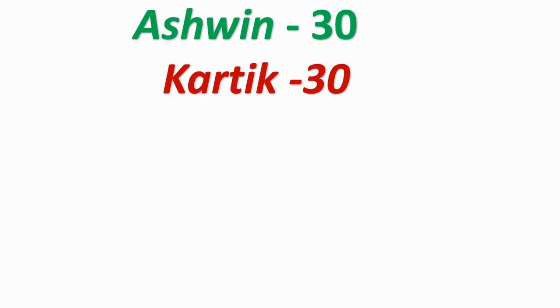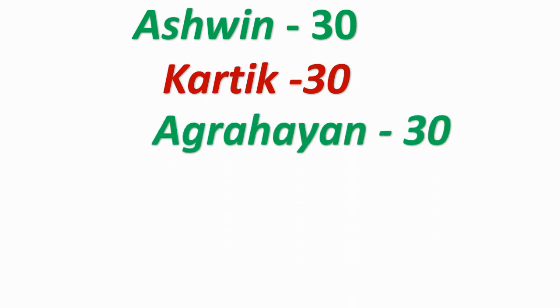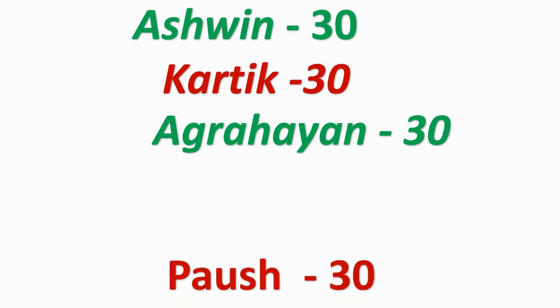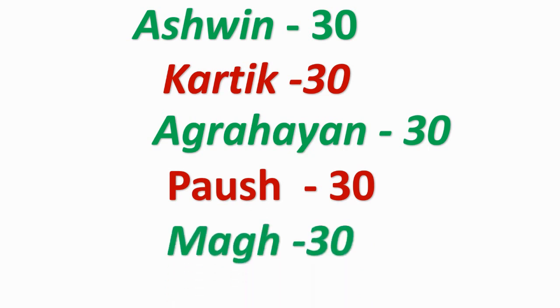7th Ashwin — 30 days. 8th Kartik — 30 days. 9th Agrahan — 30 days. 10th Posh — 30 days. 11th Magh — 30 days. 12th Falgun — 30 days.